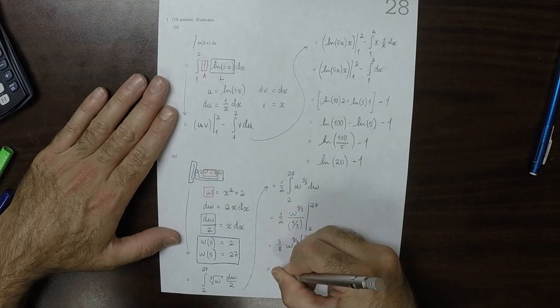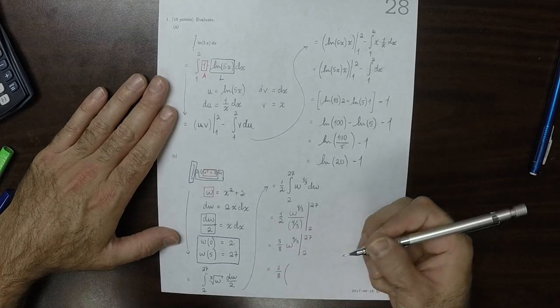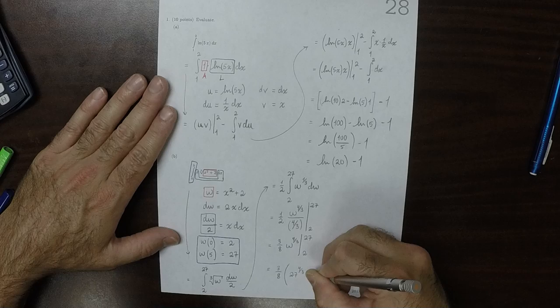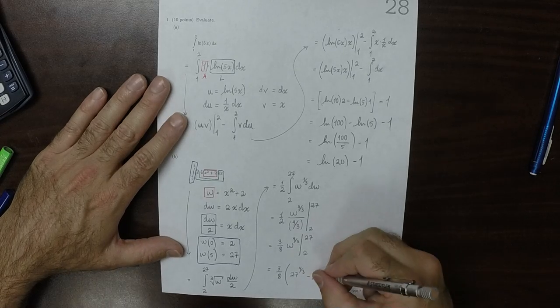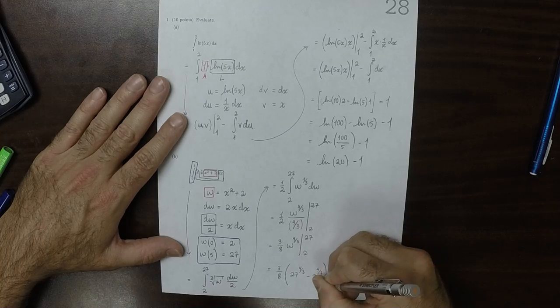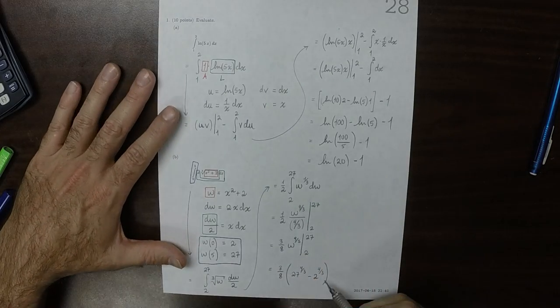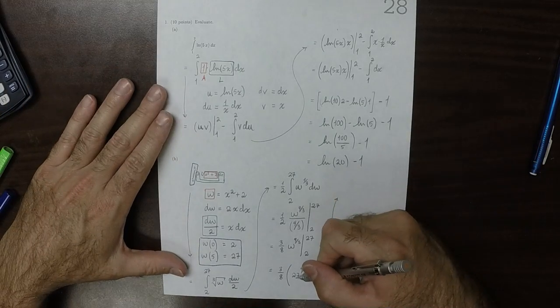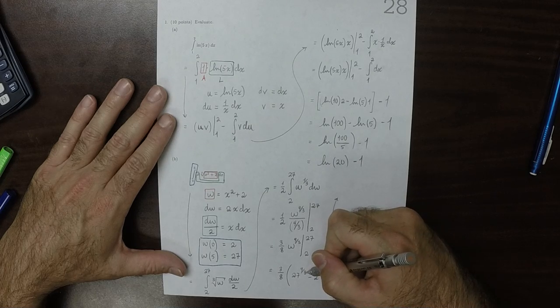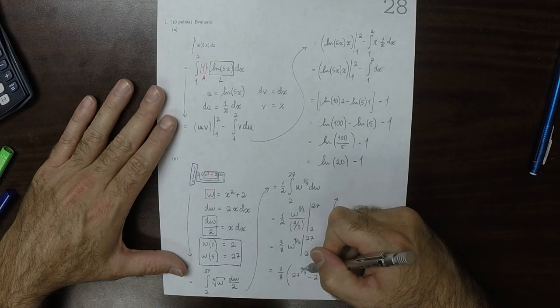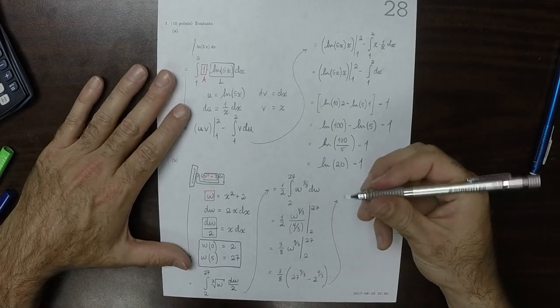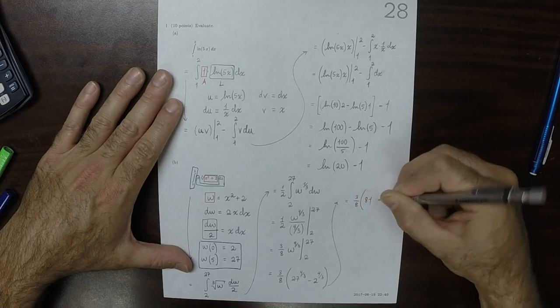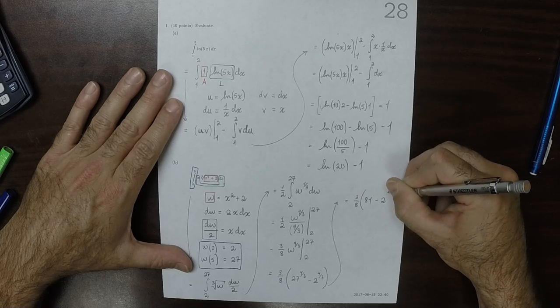So that would be 3 eighths, and then 27 to 4 thirds minus 2 to 4 thirds. And the 2 to 4 thirds can't be simplified easily, but the 27 to 4 thirds can. 27 to 1 third is 3, and then raised to 4, 3 to 4 is 81. So this would be 3 eighths times 81 minus 2 to 4 thirds.